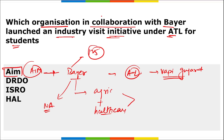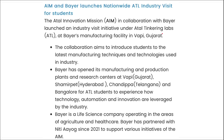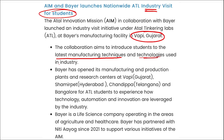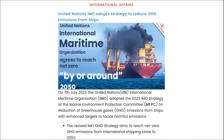Bayer partnered with Niti Aayog in 2021 to support various initiatives of the Atal Innovation Mission, and has partnered with 125 schools located in seven states through the ATL lab initiative. This industry visit initiative for students will give them practical insight about the latest manufacturing techniques and technologies used in industry, at the Bayer facility in Vapi, Gujarat.